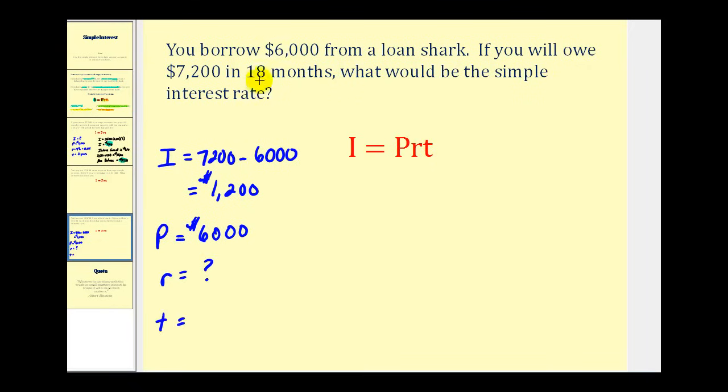We're trying to solve for the interest rate. Now our time is 18 months, but remember that the time has to be expressed in years. Well since 18 months is 12 months plus six months, 18 months is equal to one and a half years, or 1.5 years. So it is important that we do have to have our time in terms of years.